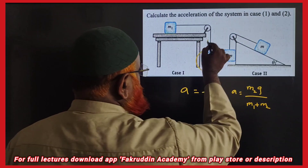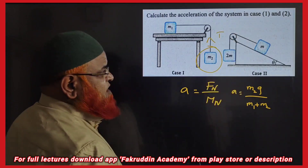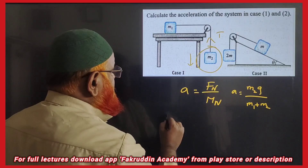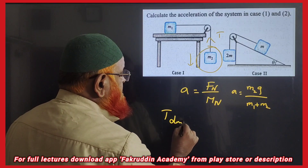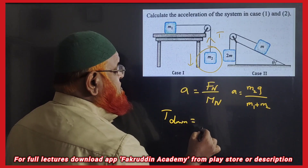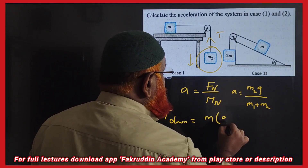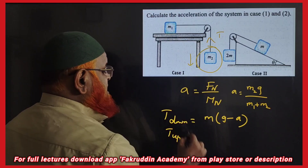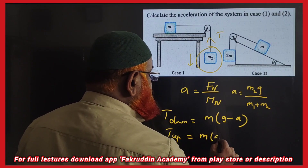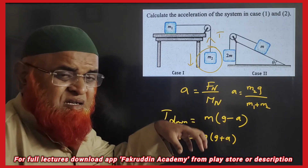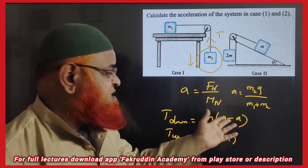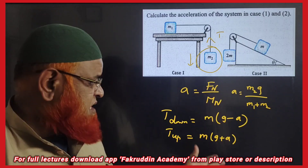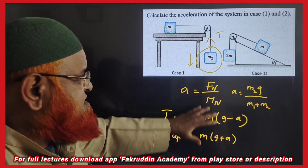If we also need to find the tension, we can do that very easily. As this block is coming downwards, whenever tension of a body moving downwards is taken as M into G minus A. Whenever a body moves upwards, we consider it as M into G plus A. So moving down, tension becomes subtraction; moving upwards, tension adds up — that's why G plus A. This is for the first system.